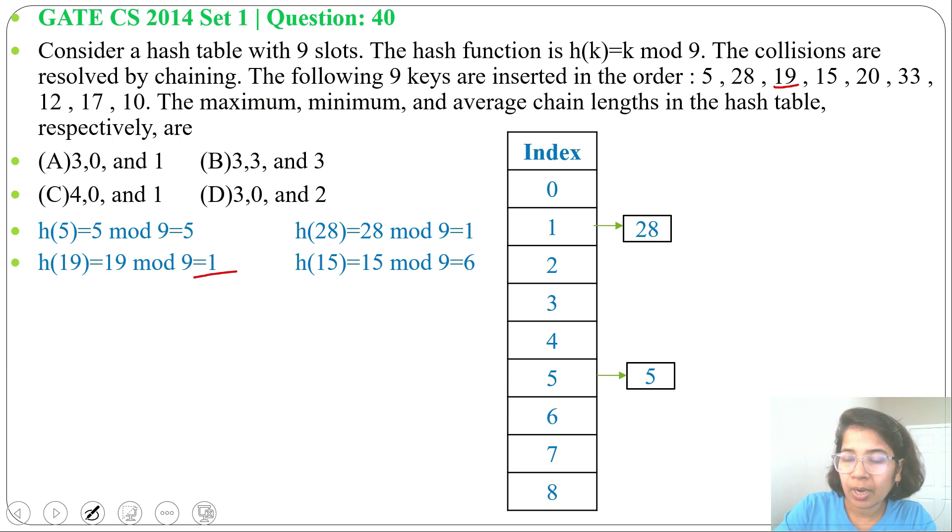In index 1, we already have 28. So we'll add 19 as a linked list. We'll add a pointer from 28 to 19. Now index 1 contains 28 and 19 in linked list format.